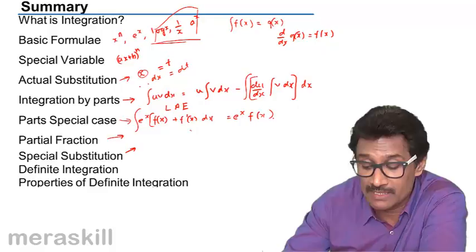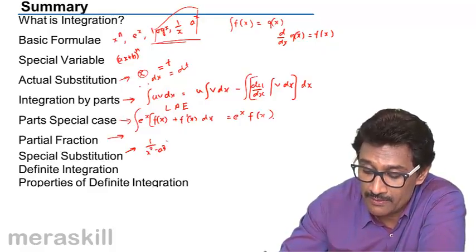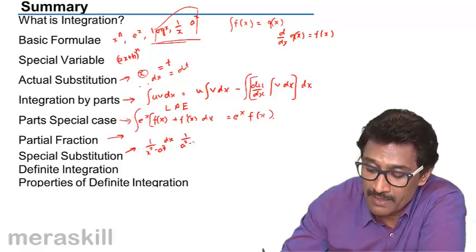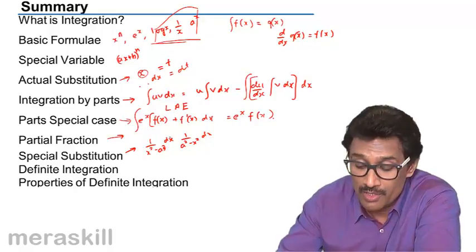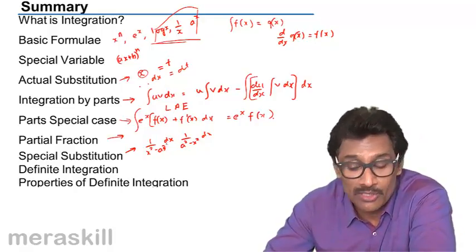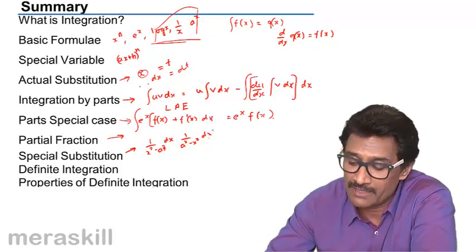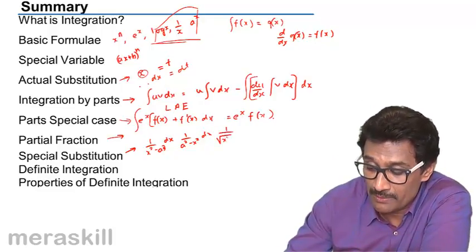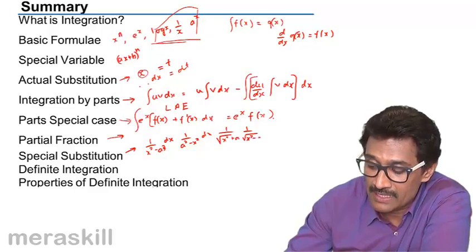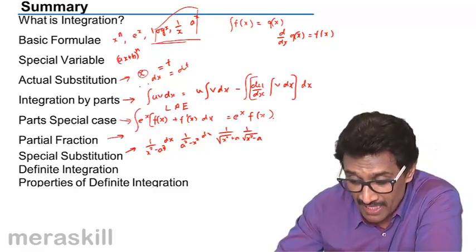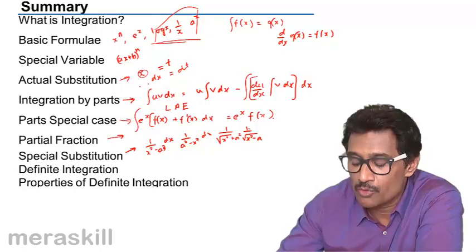Then we did the various special substitution formulas like 1 upon x square minus a square dx, 1 upon a square minus x square dx. If you remember, this is nothing but 1 upon 2a log x minus a upon x plus a. This is 1 upon 2a log a plus x upon a minus x. Then we did 1 upon root x square plus a square and 1 upon root x square minus a square, which is nothing but log of x plus root x square plus a square. Similarly, this is going to be log of x plus root x square minus a square.